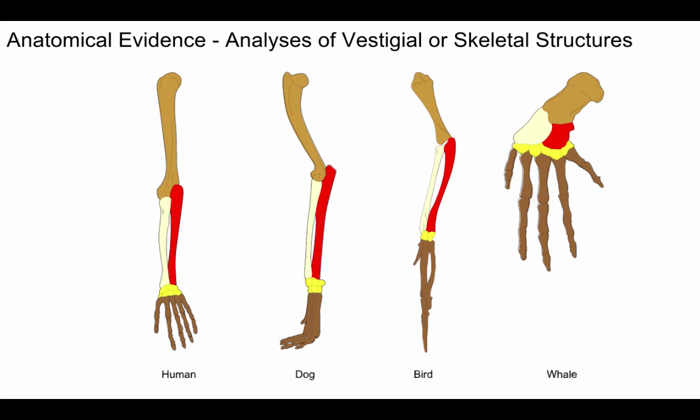Another piece of evidence is anatomical evidence, grouped into skeletal structures. The human forearm, a dog's forelimb, a bird's wing, and a whale's forelimb are all forelimbs of vertebrates with a similar bone pattern: one upper arm bone, two lower arm bones, many wrist bones, and digits. These are homologous structures — they share a similar evolutionary history but have very different adult forms and functions — suggesting a common ancestor.